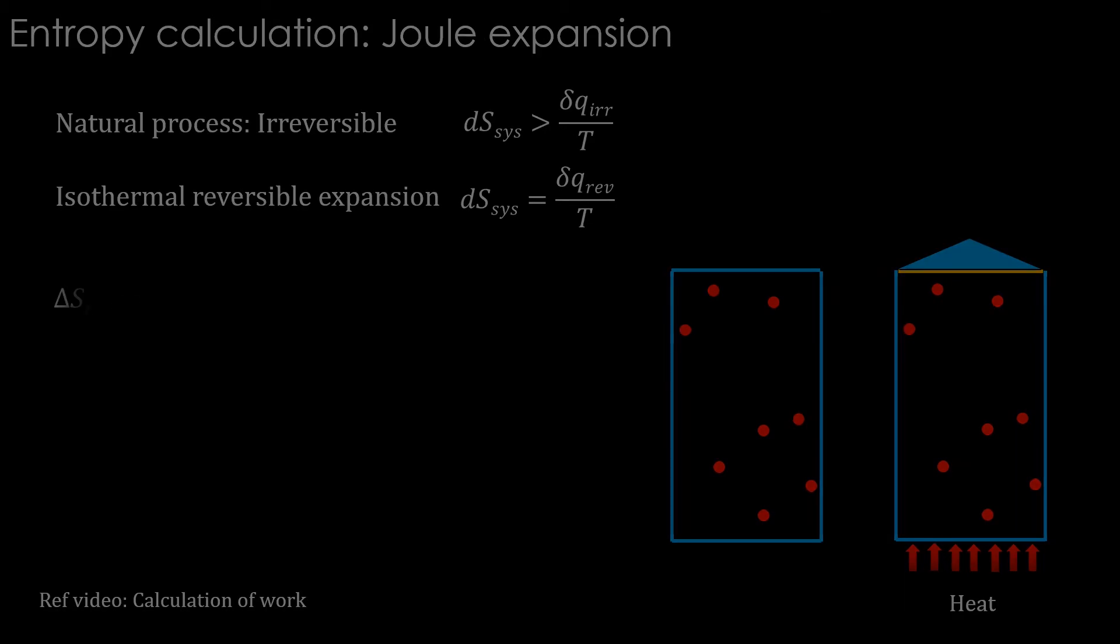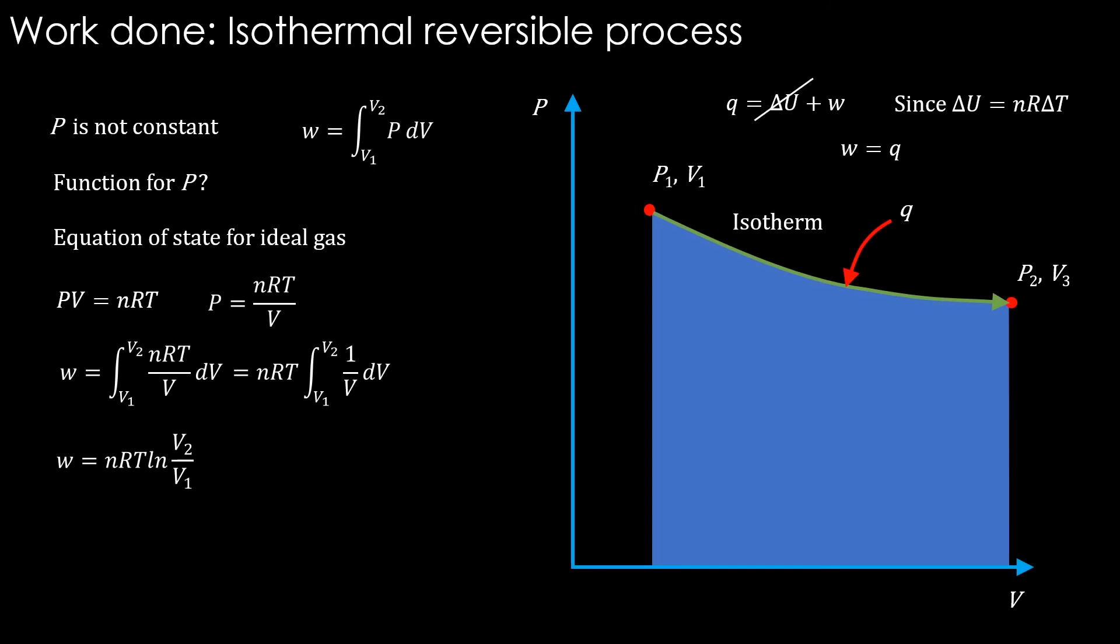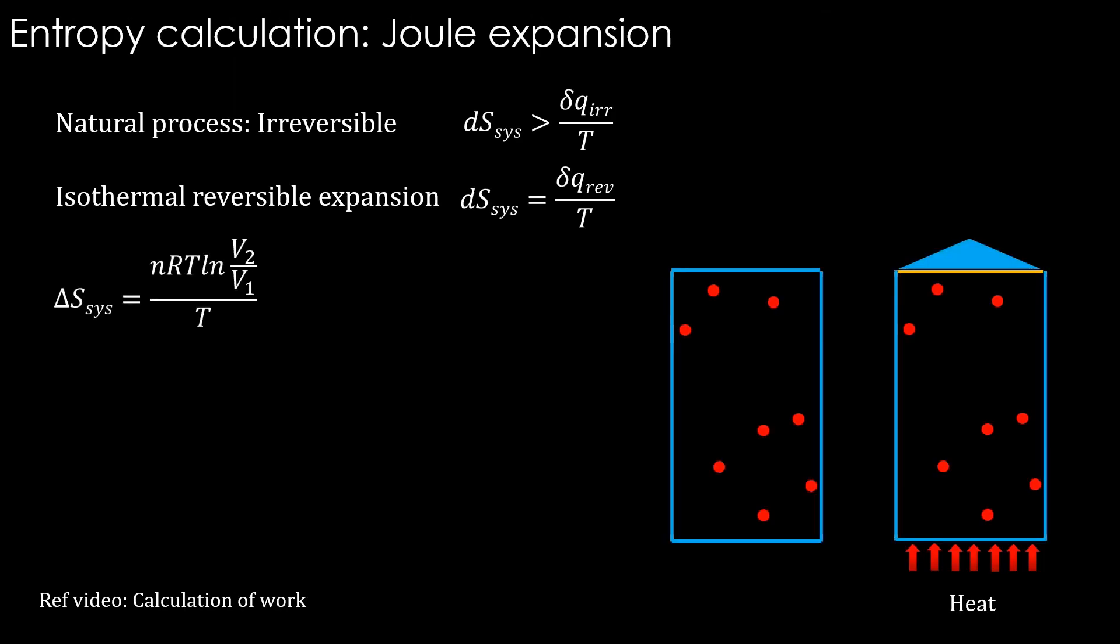Now, in the video on calculation of work, we have shown that in an isothermal reversible process, the w is equal to q and it turns out to be nRT natural log of v2 divided by v1. We can use it here. Since n is 1 and the final volume is twice the initial volume, we get R natural log of 2v1 divided by v1. Therefore, the entropy change is R natural log of 2.